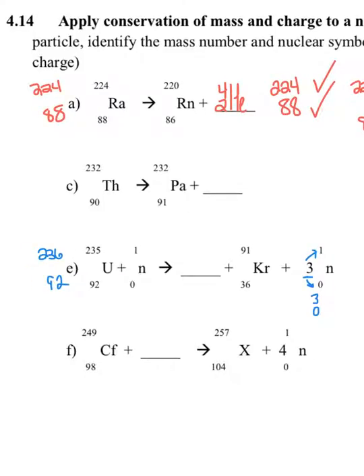On the right, I have 91 plus 3 neutrons, and remember I said to distribute that 3. So it's like 91 plus 3, and that gives me 94 as my top number currently. And I have 36 plus 0 on the right, so that leaves me at 36 as my bottom number. So I need to figure out what that missing particle has to be to bring 94 all the way up to 236, and to bring the bottom number, 36, all the way up to 92.